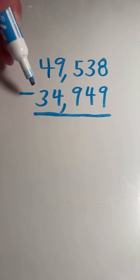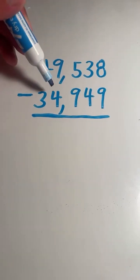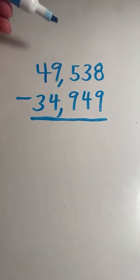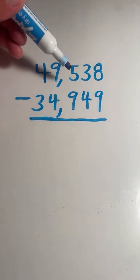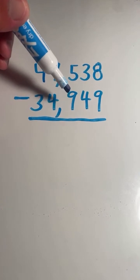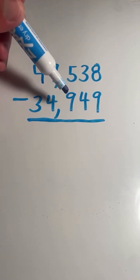So 4 is bigger than 3, so we will not need to regroup in the 10,000s place. 9 is bigger than 4, so we will not need to regroup in the 1,000s place. In the 100s place, 5 is not as big as 9. You cannot start out with 5 and take away 9, so we will need to regroup in the 100s place.